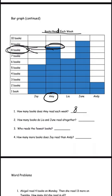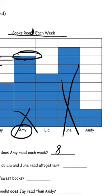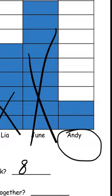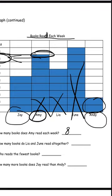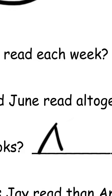Number 3 says, who reads the fewest books? Obviously it's not June because she reads 9 books, and not Amy. Leah has the next most. We're left with Jay and Andy. Andy has the least because he only has 2 colored-in bars, which means he only reads 2 books each week. So Andy is the answer for number 3.